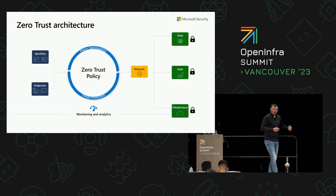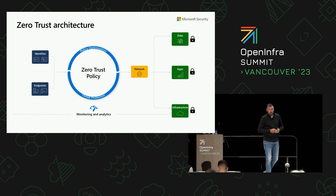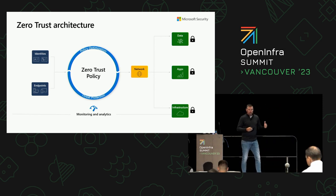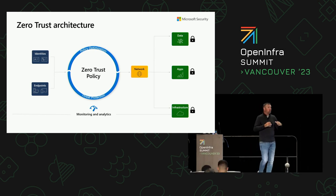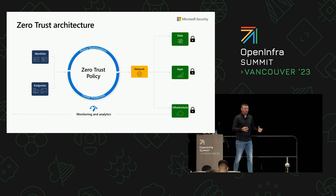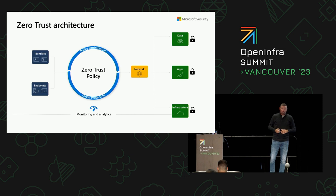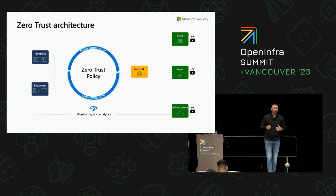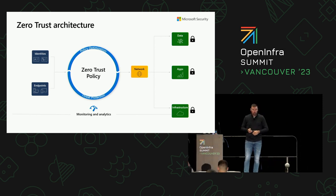What is the architecture we're looking at from a capabilities point of view? We've got identities and endpoints tying into a zero-trust policy, which brings in policy optimization and threat protection capabilities integrated with the network to go across the data construct, the app construct, and the base infrastructure running those components.